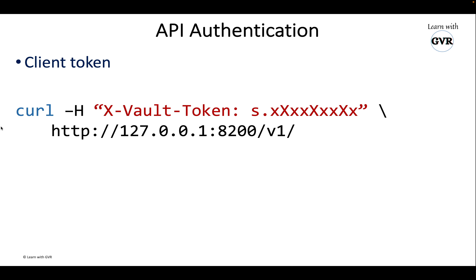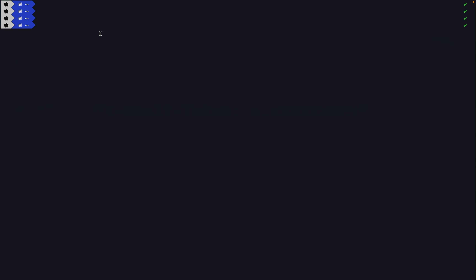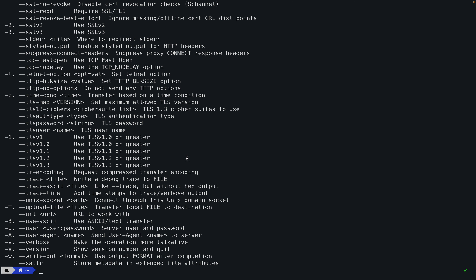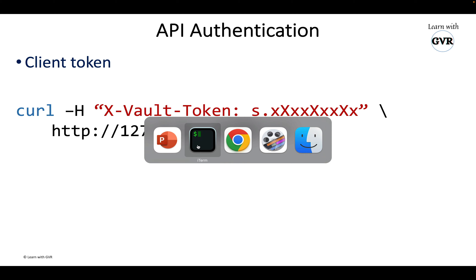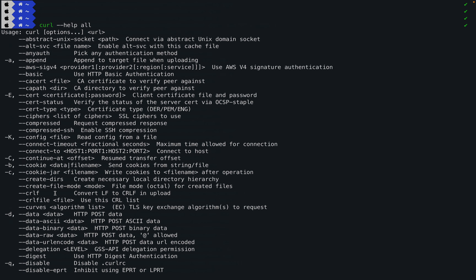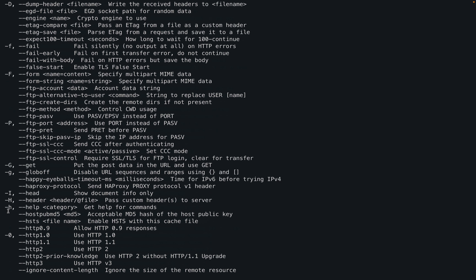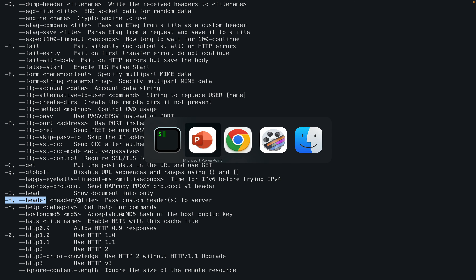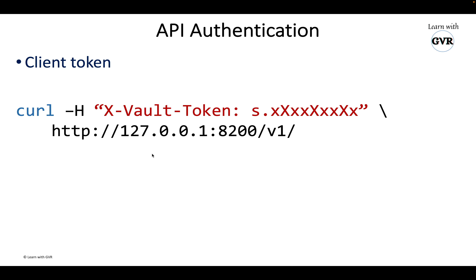What exactly does '-H' mean? If you run 'curl --help all' you can look it up. The capital '-H' is a header — so we are passing to the HTTP server as a header: 'X-Vault-Token: <client_token>'. This client token can be the root token or any other token. This is the way you authenticate to the Vault server.